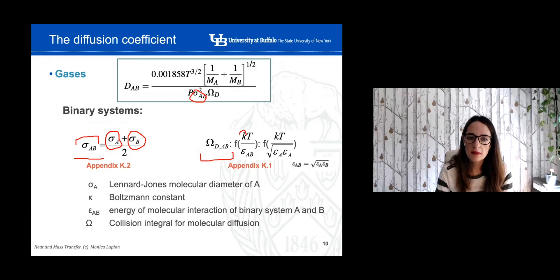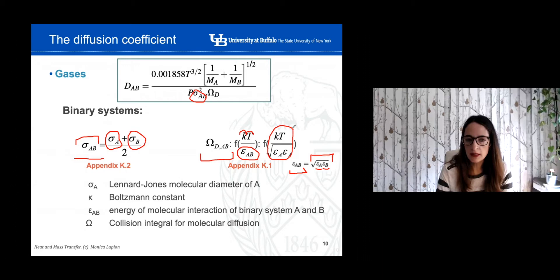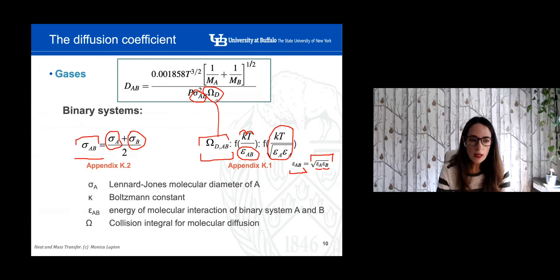Usually you will be able to calculate everything from the table, and from that you get the collision integral omega to incorporate into the equation. That's one way to get sigma and omega to calculate the diffusion coefficient. There is another way when you can't find the values you need in Appendix K — you need some other information to calculate these two parameters.